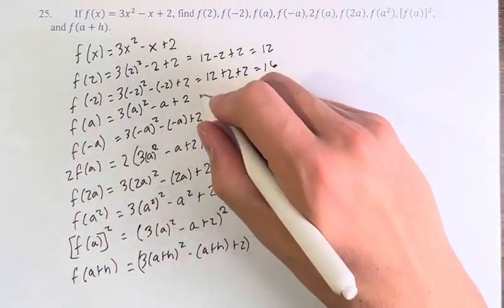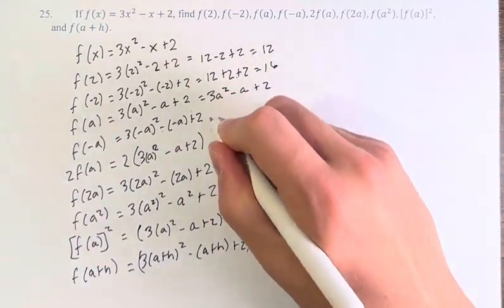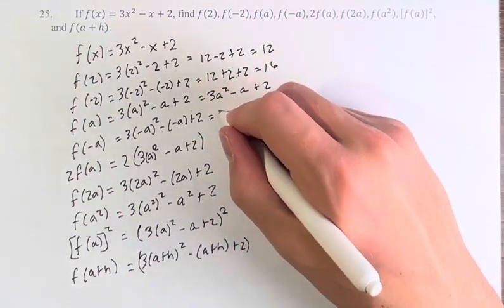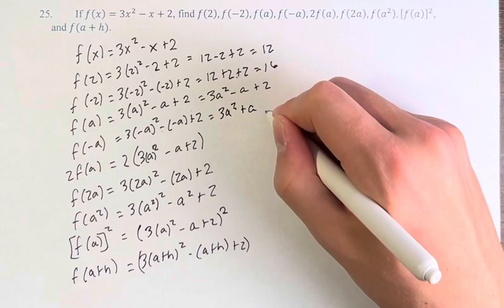3 times a squared is 3a squared, minus a, plus 2. negative a squared is the same, positive a squared, minus negative a becomes plus a, plus 2.